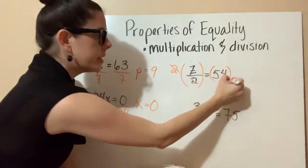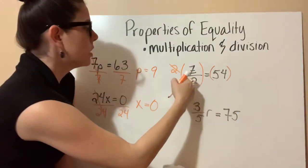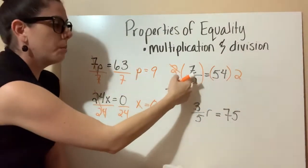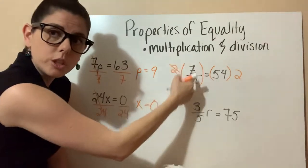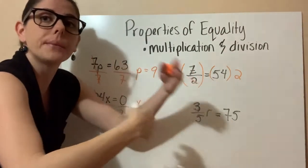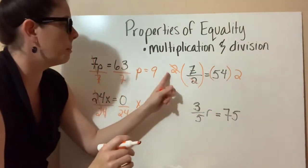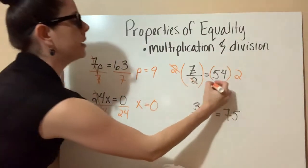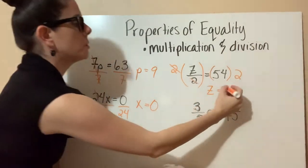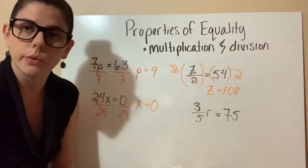So I'm putting this side in parentheses and multiplying it by 2. Whatever I do to one side, I do to the other. Because I divided in the original equation, I have to do the opposite operation to get z by itself — the opposite of division is multiplication. So multiplying by 2 on both sides gives me z equals 54 times 2, which is 108. So z equals 108.